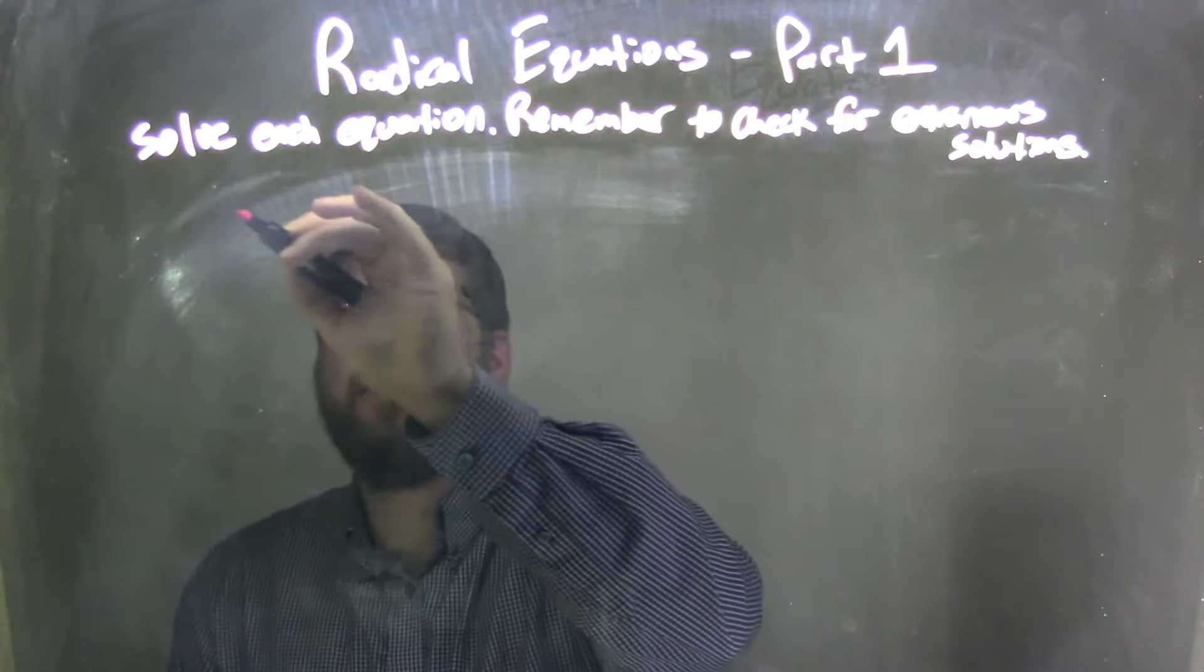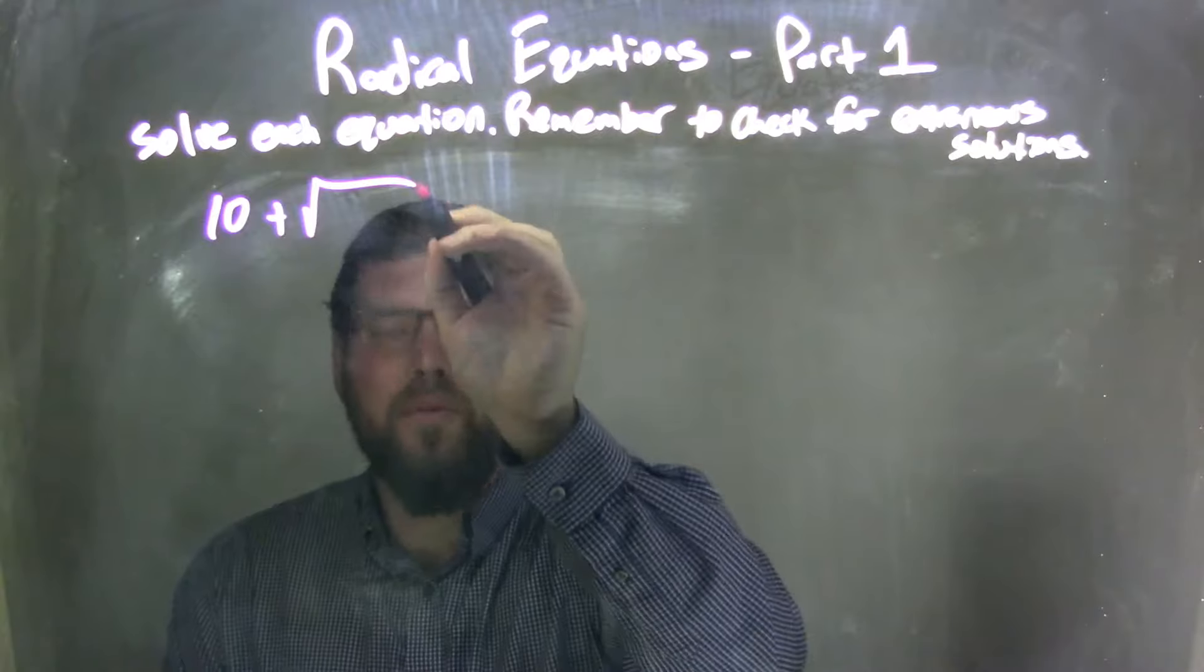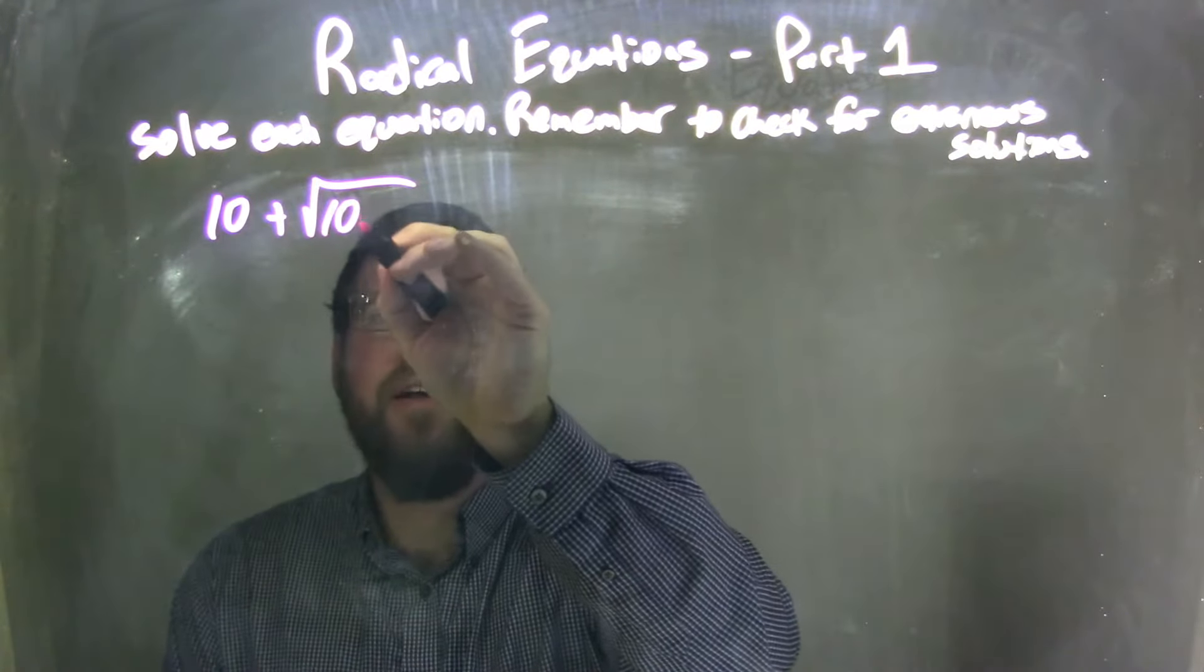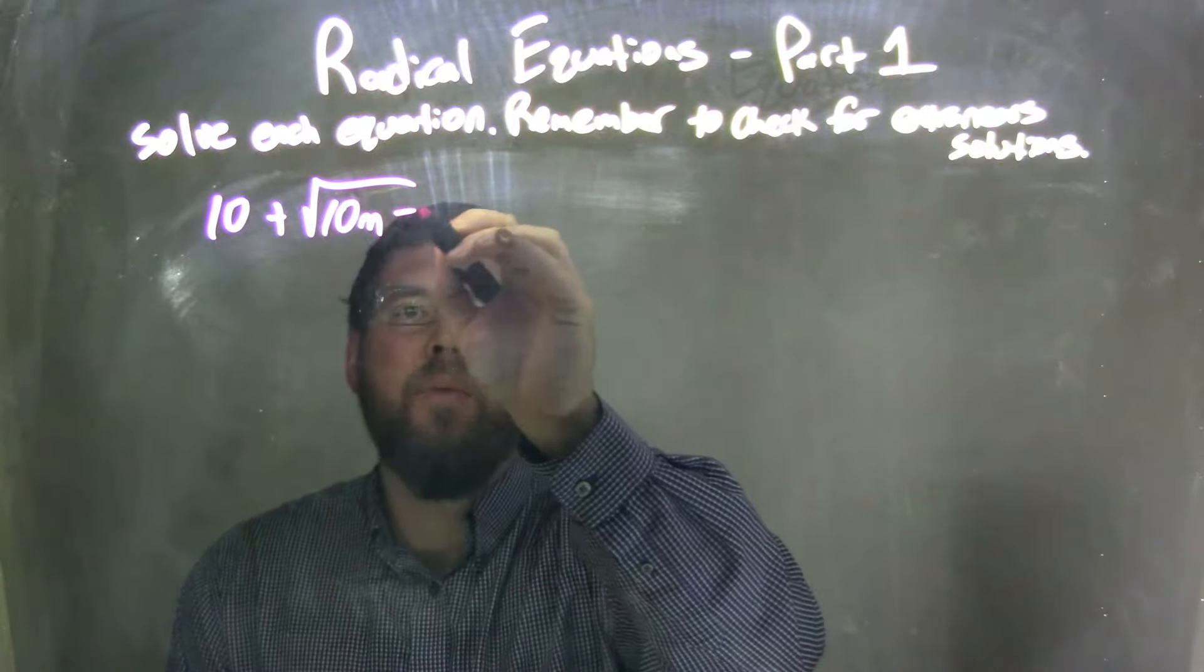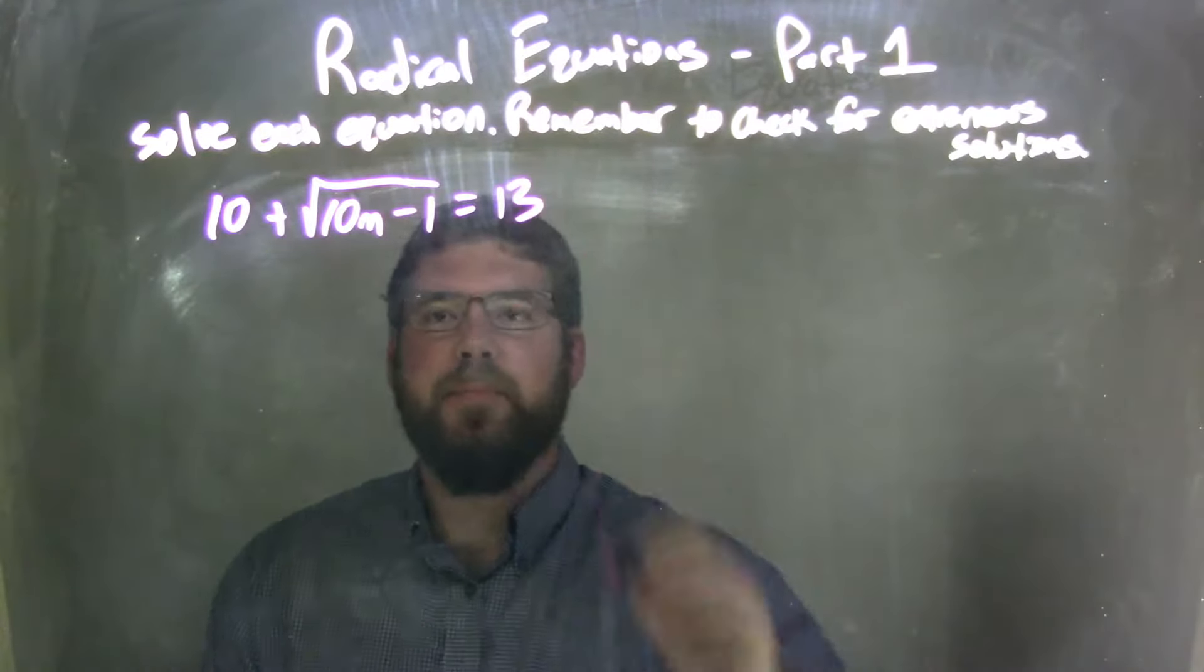If I was given this equation: 10 plus the square root of 10m minus 1 equals 13.